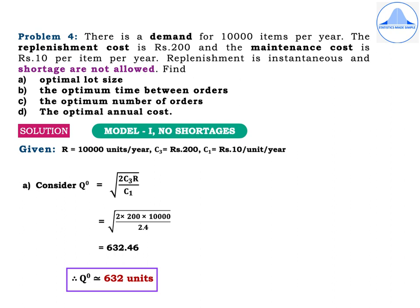Optimal lot size: Q⁰ = √(2C₃R / C₁) = √(2 × 200 × 10,000 / 10) = 632.46, so Q⁰ ≈ 632 units after rounding off.